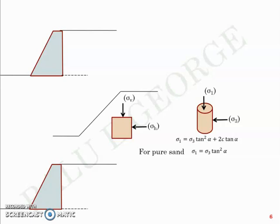Good morning all. Till now we have discussed what lateral earth pressure means, what the three types of lateral earth pressure could be — which includes active, passive, and at-rest pressure — and we defined the coefficient of lateral earth pressure K, which can have Ka, Kp, or K0 depending on the case. We also defined the relations of sigma_v and sigma_h — vertical and horizontal stress — connected by K, the coefficient of lateral earth pressure.